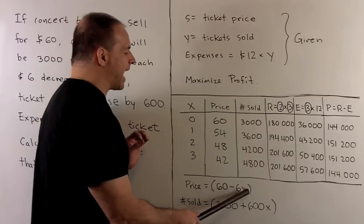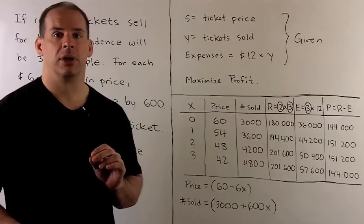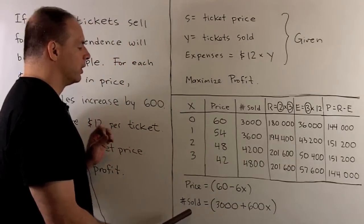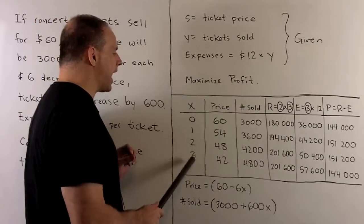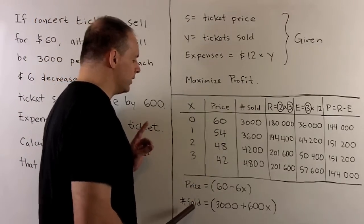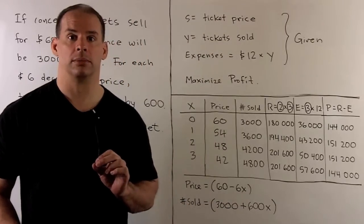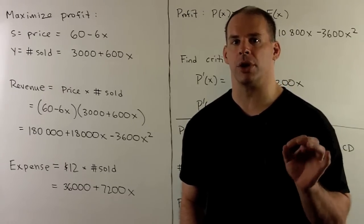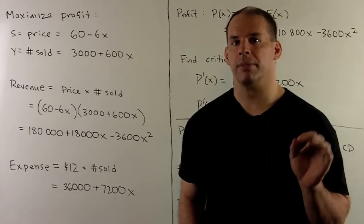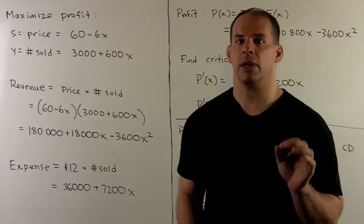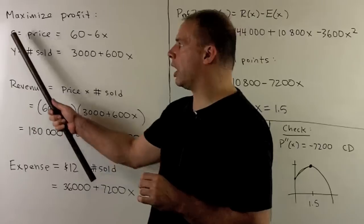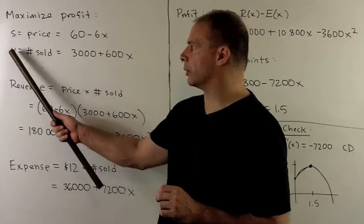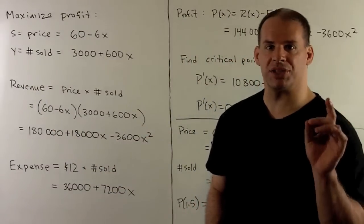Now let's try to get everything in terms of this variable X. For price, we're taking 60 and subtracting off X times $6, so that gives me a formula for price in terms of X. For the number of tickets sold, we're taking 3,000 and adding X times 600. In order to maximize profit, I need to put the profit function in terms of a single variable. Ticket price s equals 60 minus 6x. Number of tickets sold y equals 3,000 plus 600 times X.